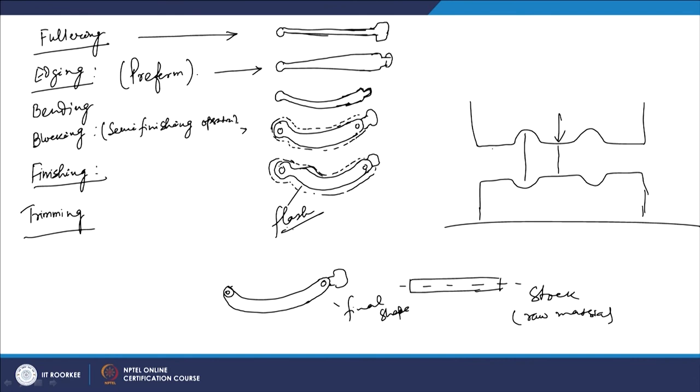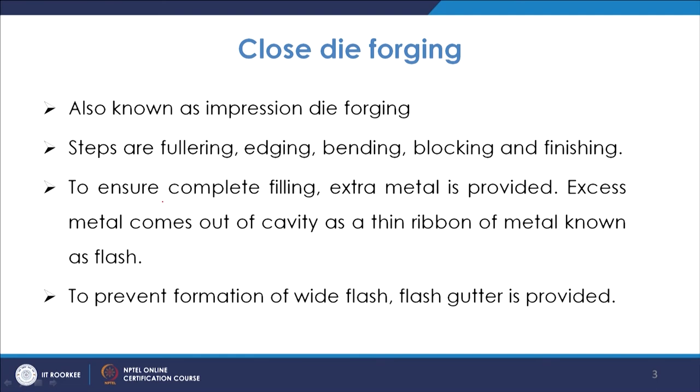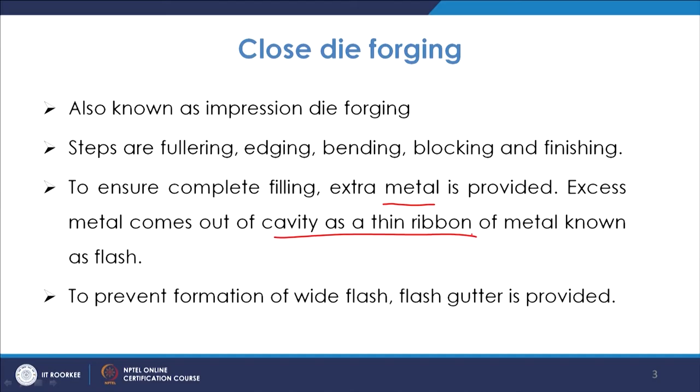These are the different stages in the case of closed die forging. In impression die forging, you provide extra metal so that there is complete filling of the cavity. Excess metal comes out of the cavity as a thin ribbon of metal known as flash. To prevent the formation of wide flash, a flash gutter is provided. If the flash is too wide, the temperature drops and resistance increases, requiring larger force to press it further. That is why the gutter is provided in such cases.